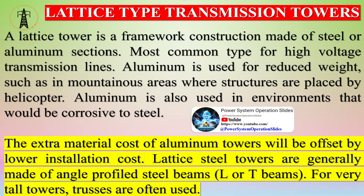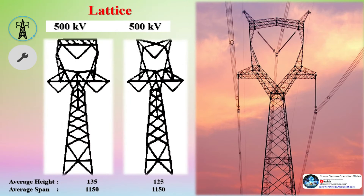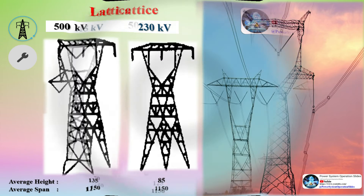Lattice towers are the most common type of transmission towers, consisting of steel frames that form a triangular or square shape. They are strong, flexible, and easy to assemble and transport. Lattice towers can support multiple circuits and span long distances, making them suitable for most terrains and weather conditions. However, they have drawbacks such as high maintenance costs, visual impact, and susceptibility to corrosion and bird collisions.